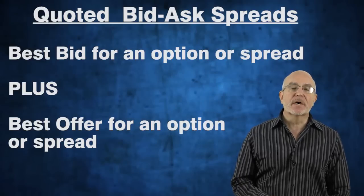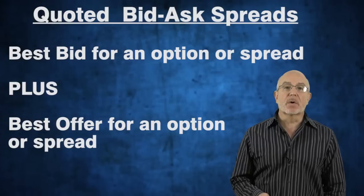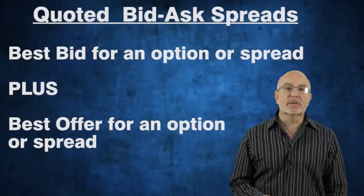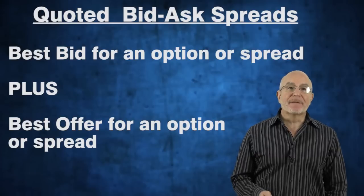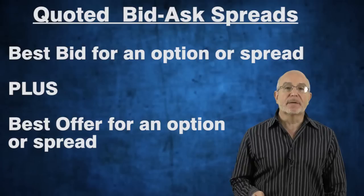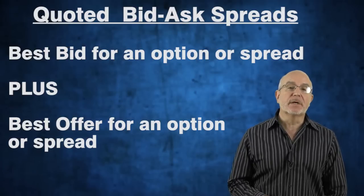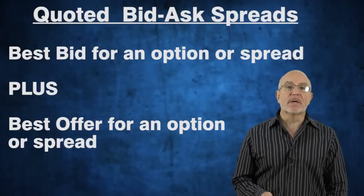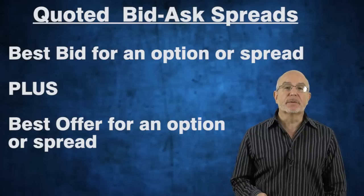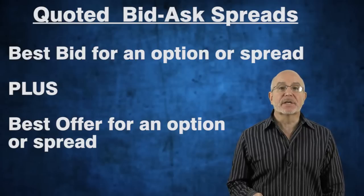What happens in options trading is when you use your online broker, you'll see that there are a bid and an ask for every option, and a bid and an ask for every option spread that you might be interested in buying or selling. The best bid you see on the screen is the best bid being offered in the world at that moment. You also see the best offer in the world at that moment, and the mid is the mathematical average — the midpoint between those two numbers.